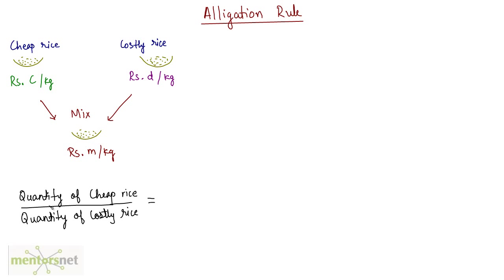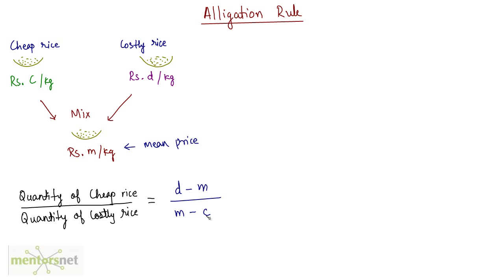So the ratio of the quantity of cheap rice to the quantity of costly rice will be given by the cost price of the costly rice minus the mean price, divided by the mean price minus the cost price of the cheap rice. This is basically the formula that you need to remember to solve questions on mixtures.